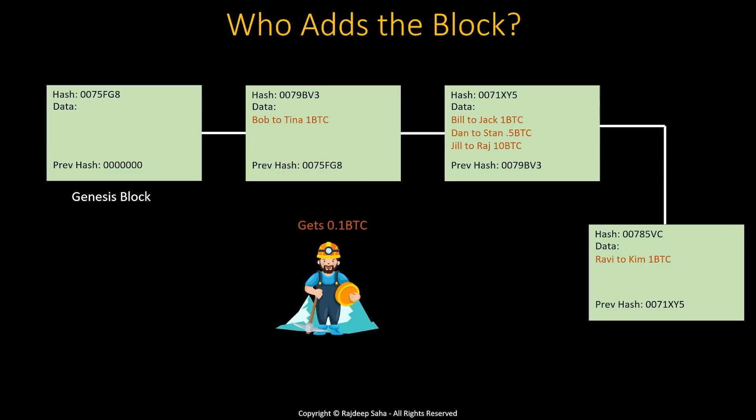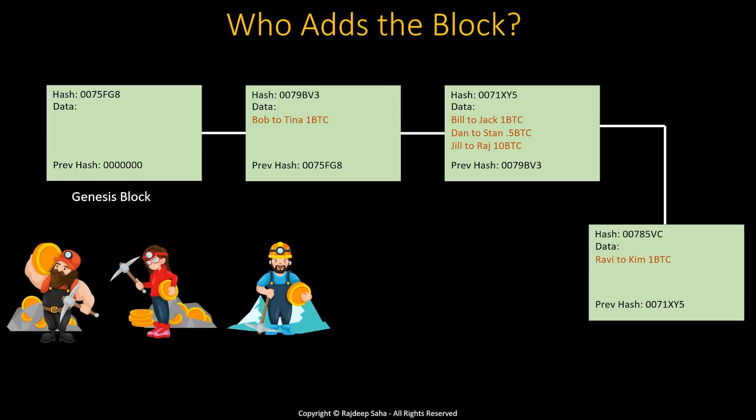Because it takes some time to mine the next block, that's why transactions using Bitcoin or Ethereum are not as fast as traditional banking transactions. The actual transaction only completes when it gets added to the block. So if Ravi wants to send one Bitcoin to Kim, unless that information is added to the block, the balance is not going to transfer from Ravi to Kim.